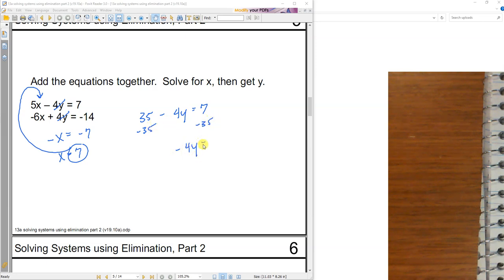Gives me 35 minus 4y equals 7. Negative 4y equals negative 28. So I have 7 comma 7.